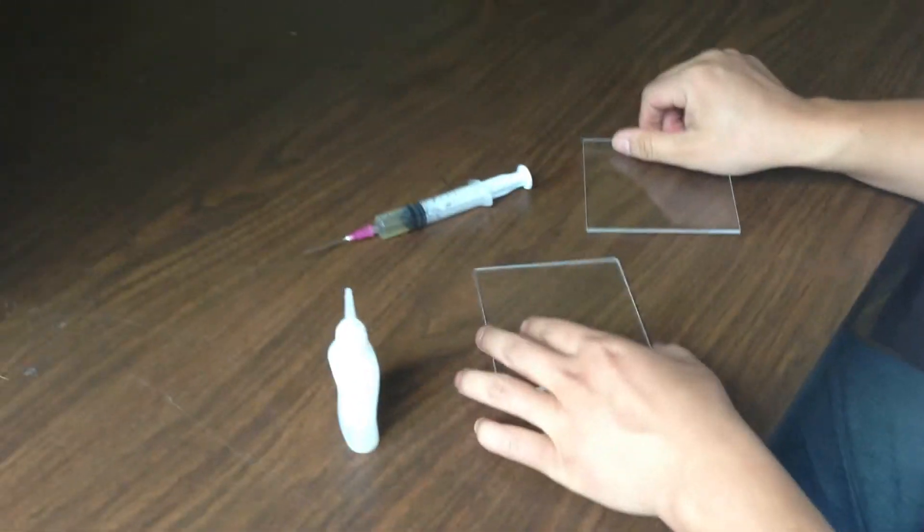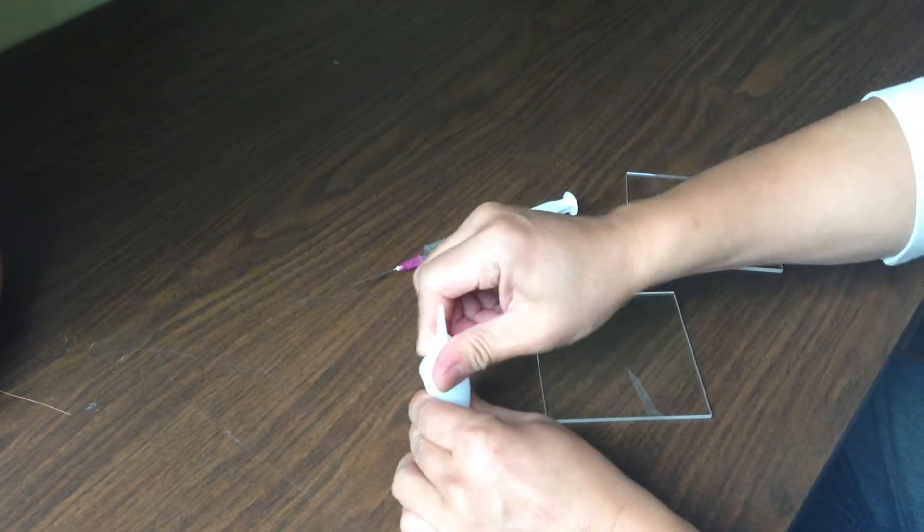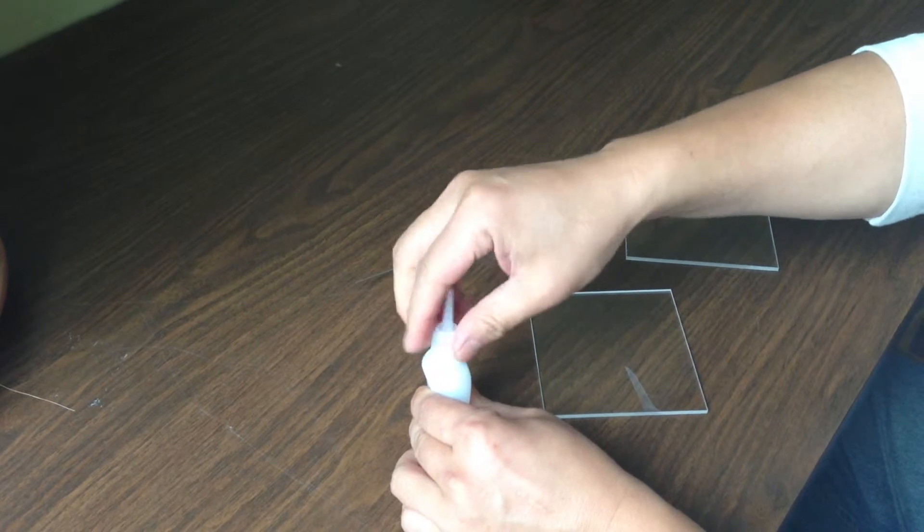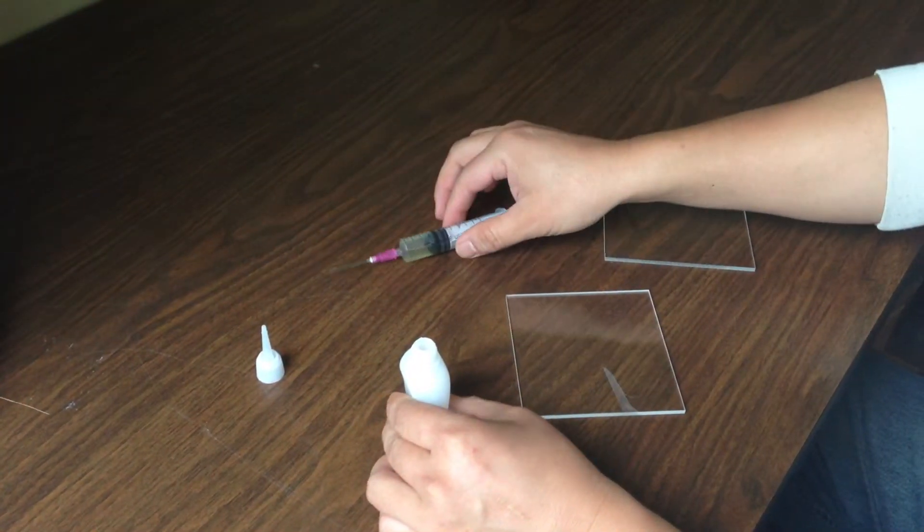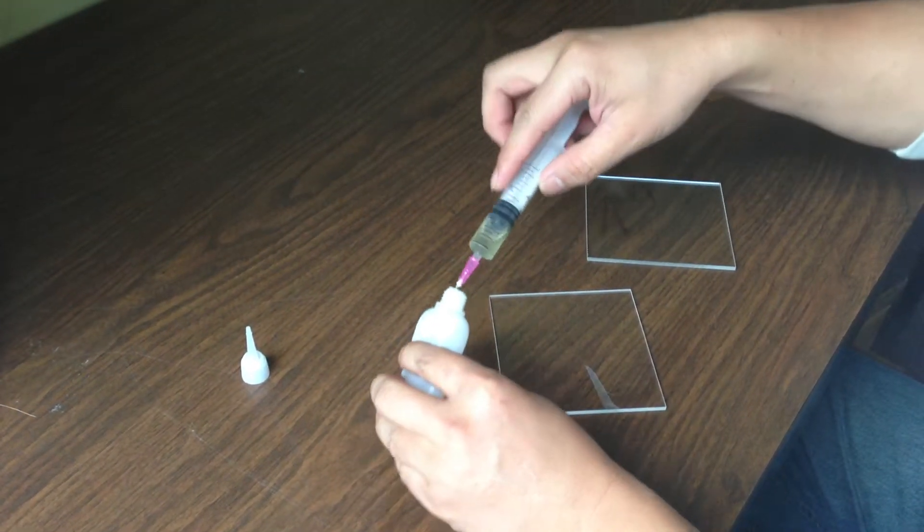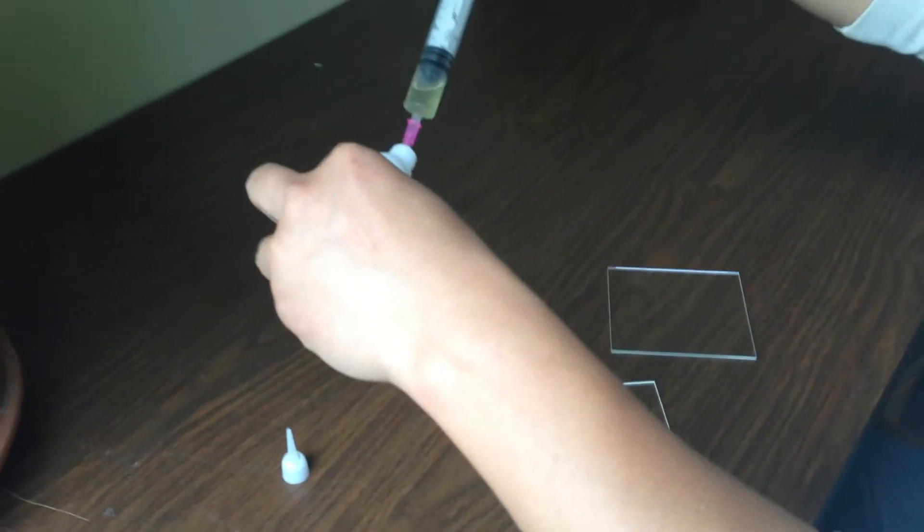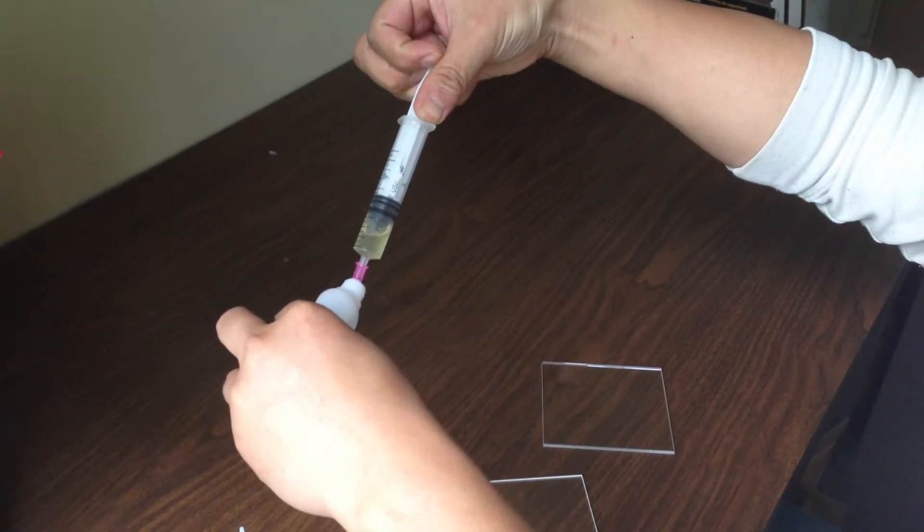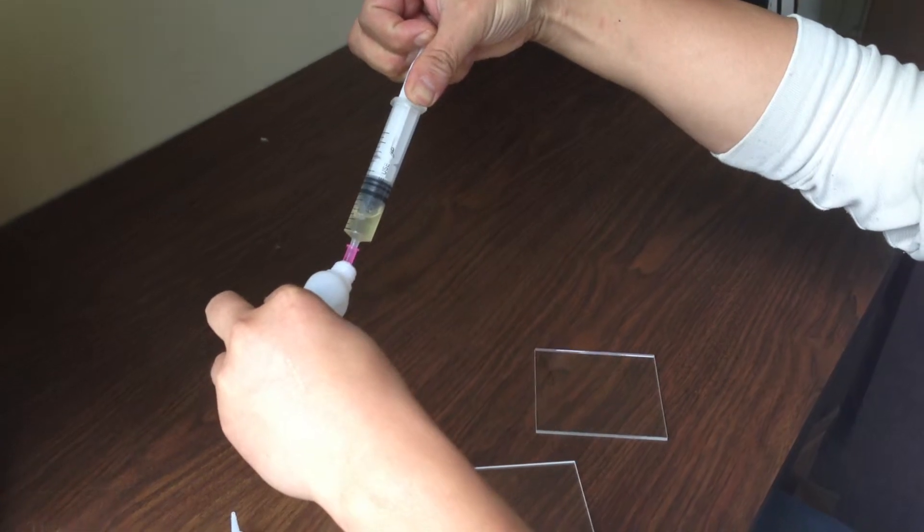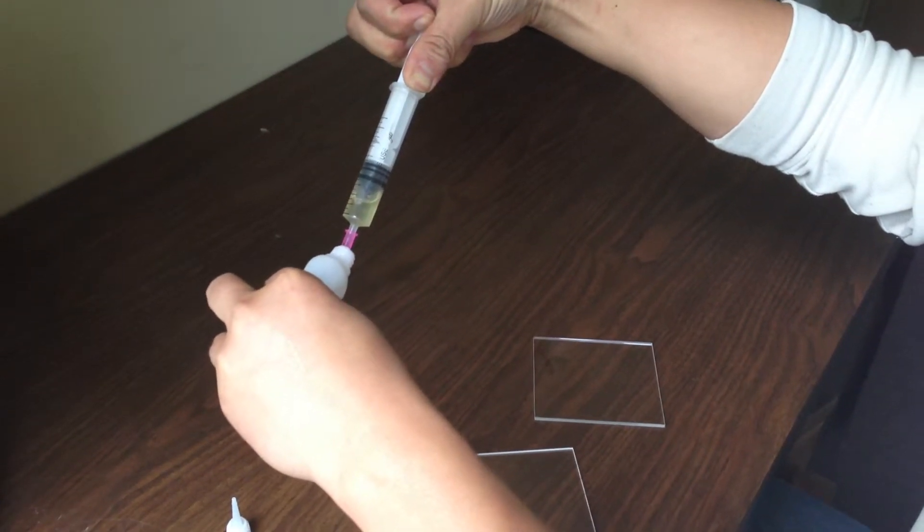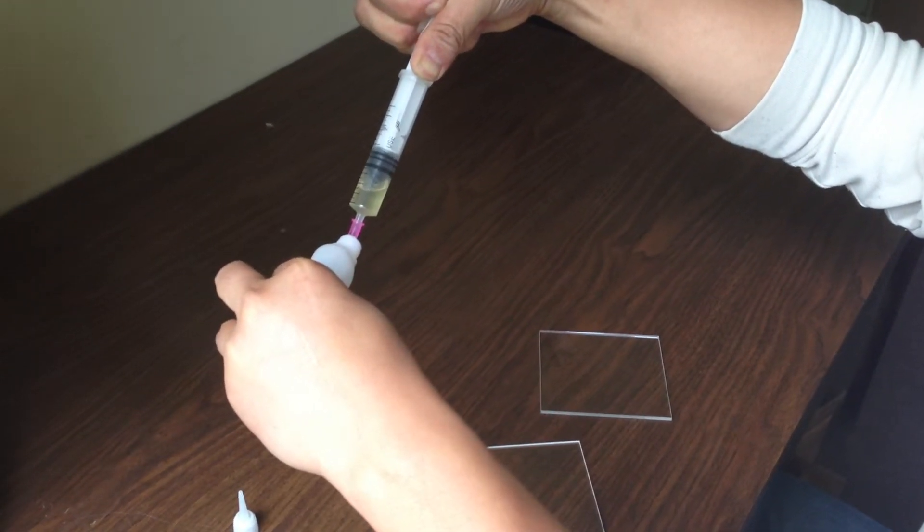Now I'm going to demonstrate how this works. First, you want to draw this from the bottle into a syringe. Now do that slowly, very slowly, because you want to allow the suction effect to kick in, and going too fast won't really help you.